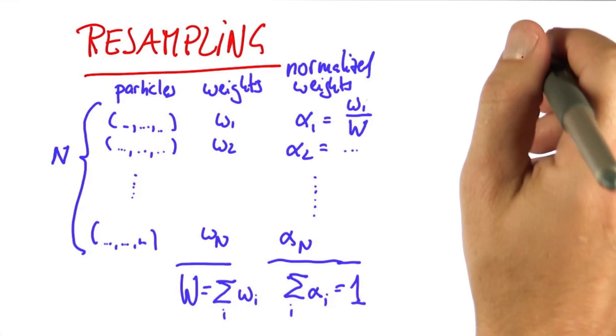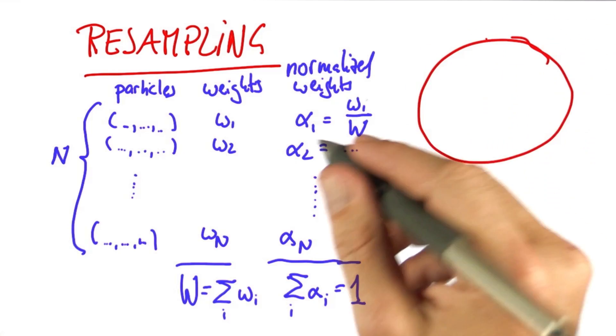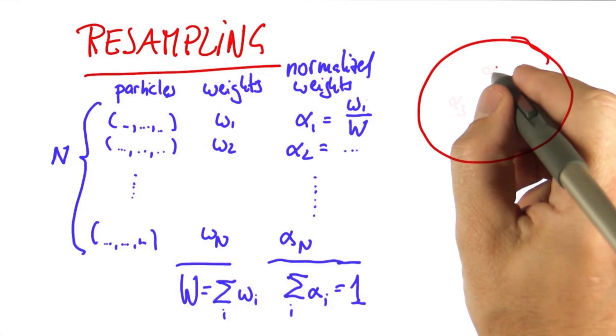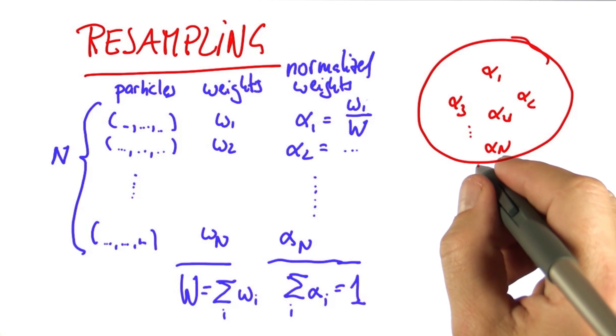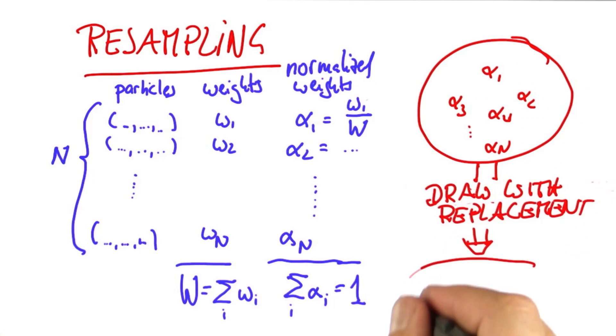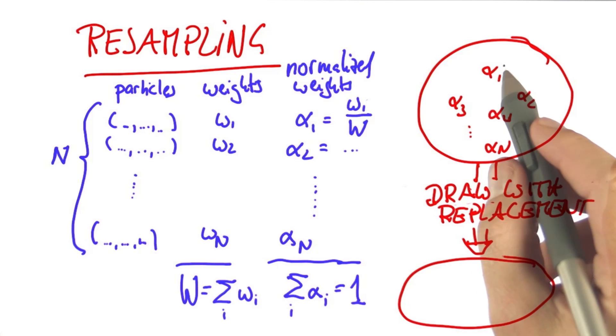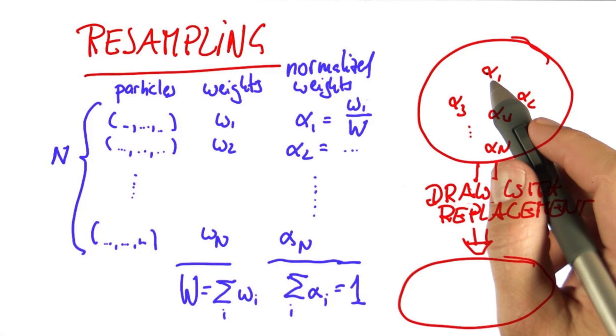What resampling now does is it puts all these particles and their normalized weights into a big bag, and then it draws with replacement n new particles by picking each particle with probability alpha.